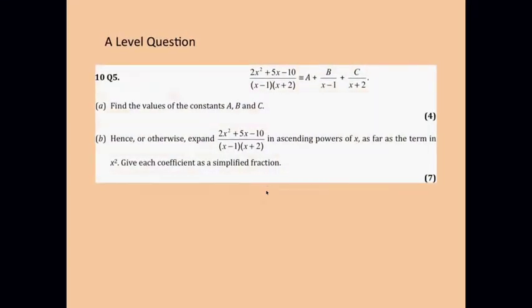Now, let's have a look at an A-level question. Here it is: (2x² + 5x - 10) / [(x - 1)(x + 2)] = a + b/(x - 1) + c/(x + 2). Find the values of the constants a, b and c. So this is dividing the fraction up into partial fractions. Then it says, hence or otherwise, expand that fraction in ascending powers of x as far as the term in x². Give each coefficient as a simplified fraction.